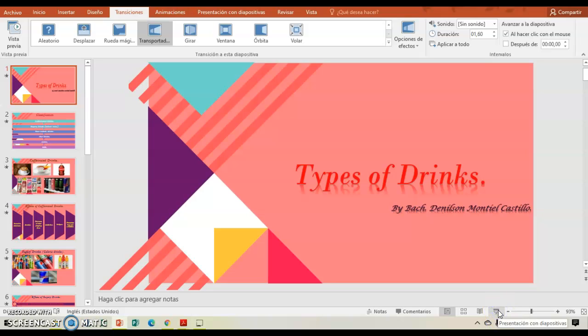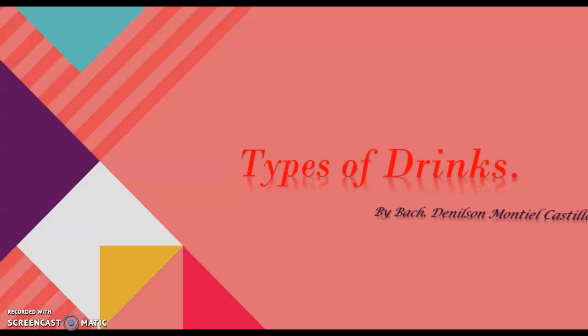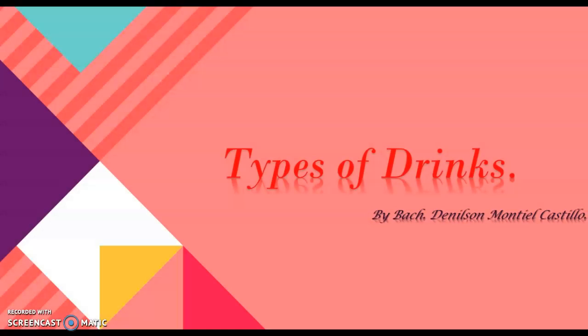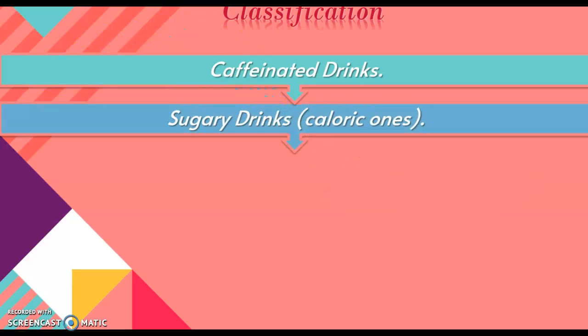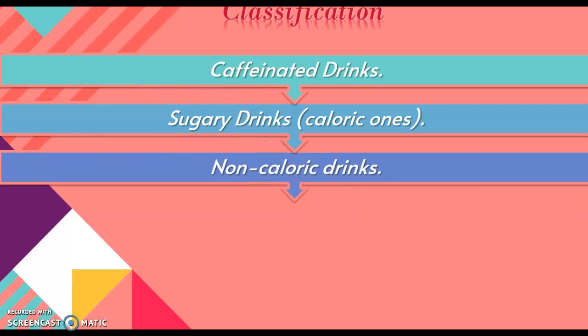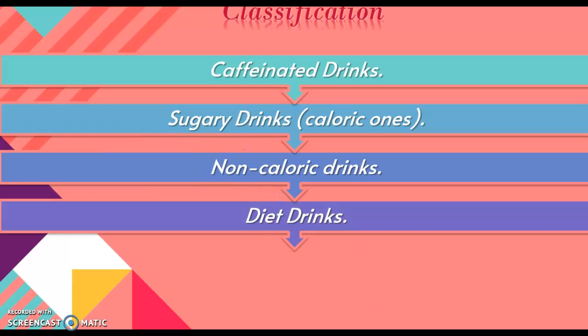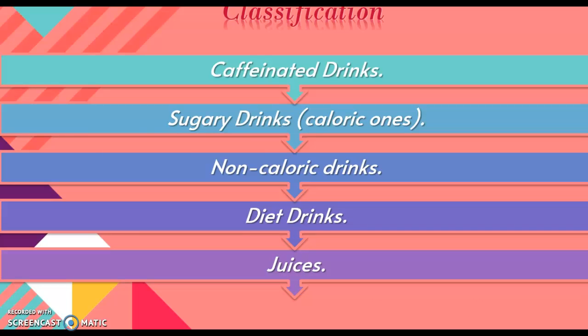Hello guys, I hope you're good. This is another video from teacher Danielson. This video is about the types of drinks, which are part of our everyday lives. First, it's important to establish a classification on the types of drinks. We have caffeinated drinks, then sugary drinks which are known as caloric or calorie drinks, non-caloric drinks, diet drinks, juices, and milk.